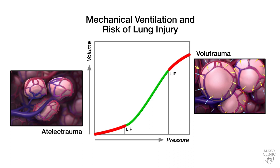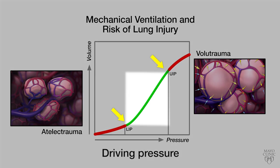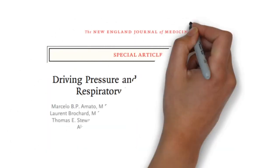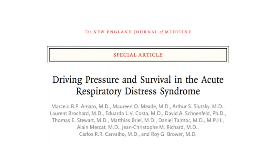You definitely want to be on the steep portion of this PV curve between the two inflection points, which is why you need lower driving pressures. But how do we know that keeping driving pressures low is actually what keeps the lung safe? What's the evidence behind this?